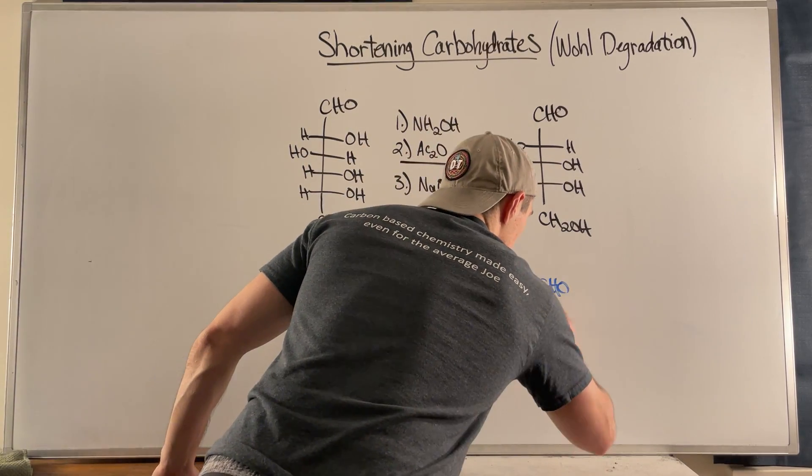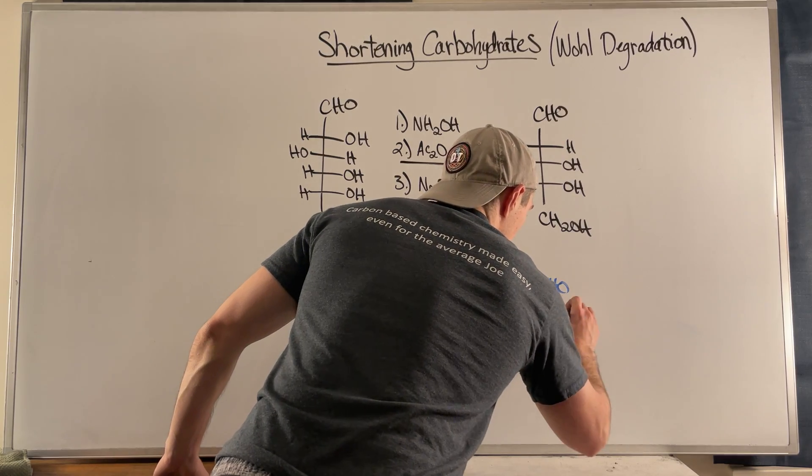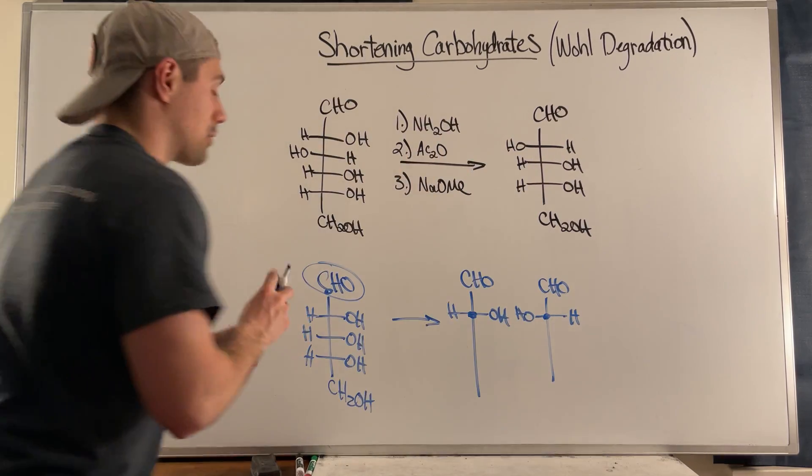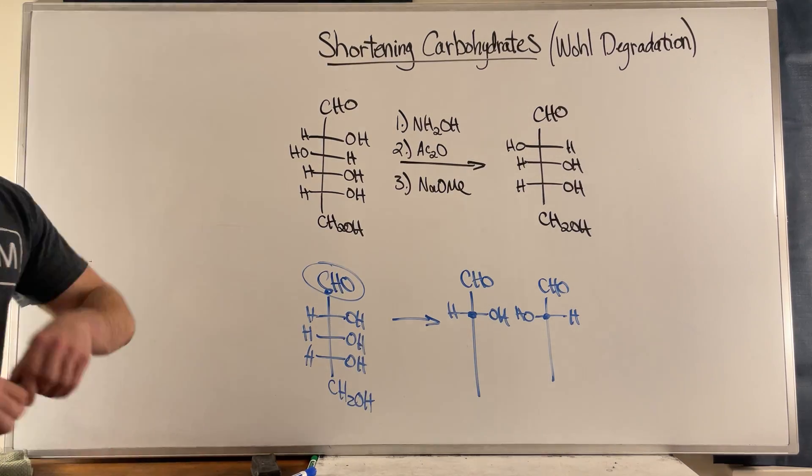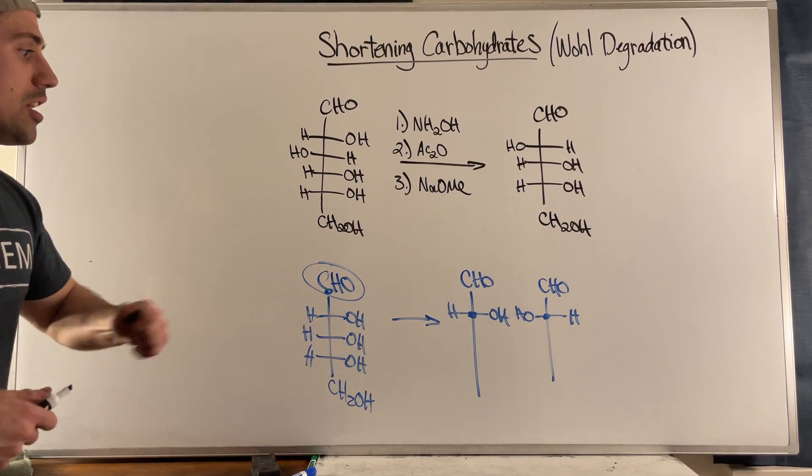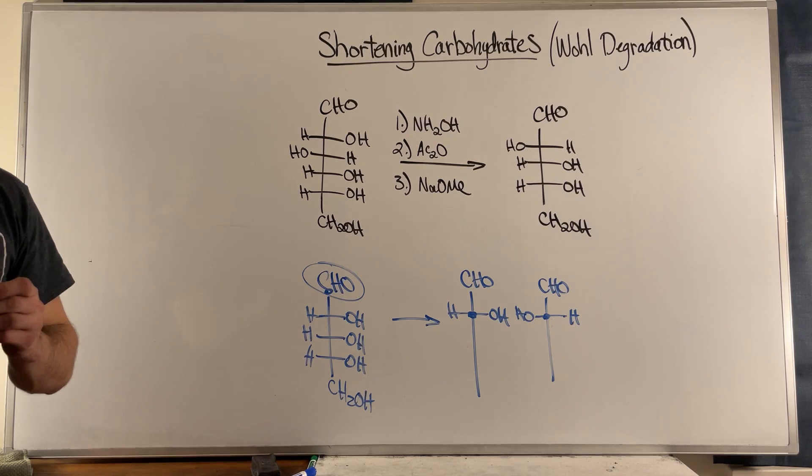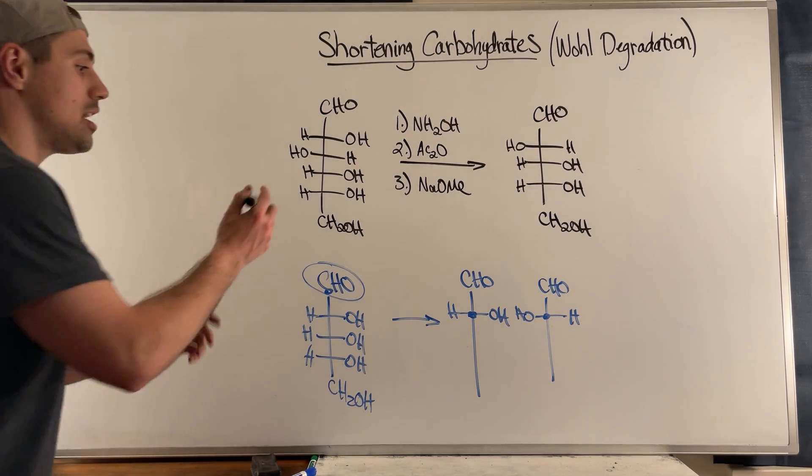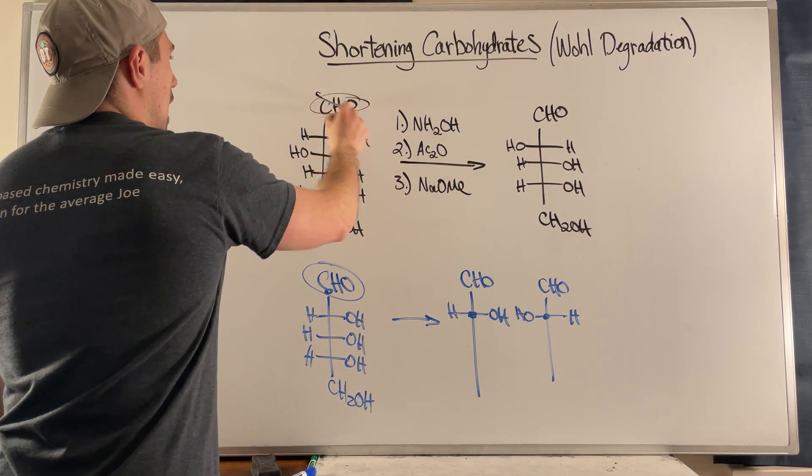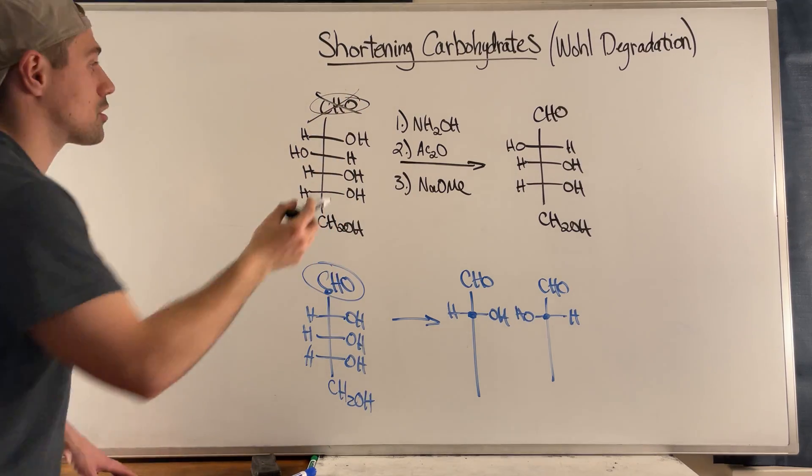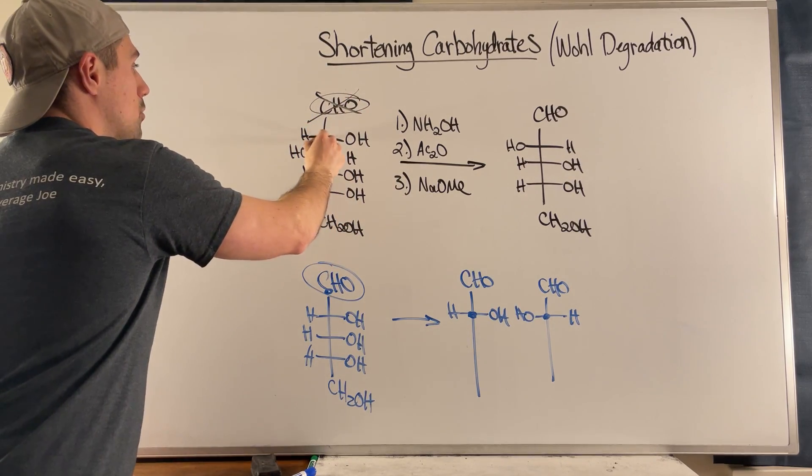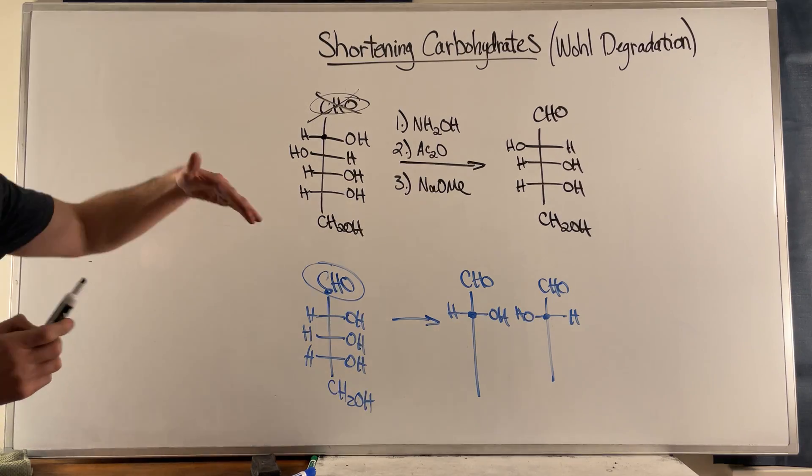However, with the Wohl degradation, you can see that we're doing the exact opposite. Instead of introducing a new stereocenter, you don't have to worry about this and you'll only have one product because what we're doing is we're taking this aldehyde, we're eliminating it, and we're transforming this carbon which was chiral into the new aldehyde that will head the top of our sugar and this will be achiral.